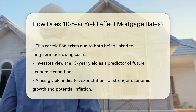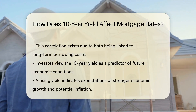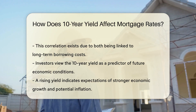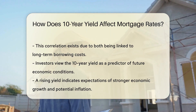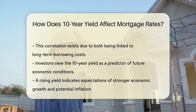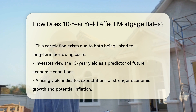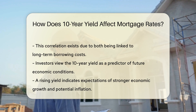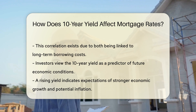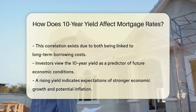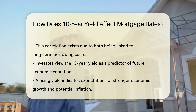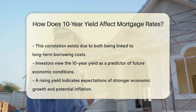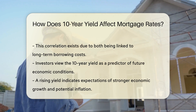Investors often view the 10-year yield as an indicator of future economic conditions. A rising yield suggests that investors expect stronger economic growth, which can lead to higher inflation. Lenders may raise mortgage rates to compensate for this risk.